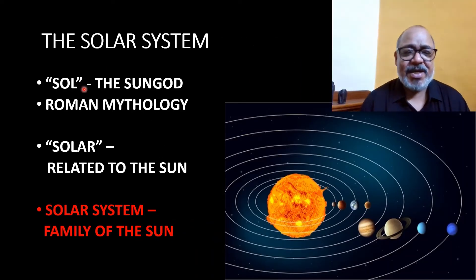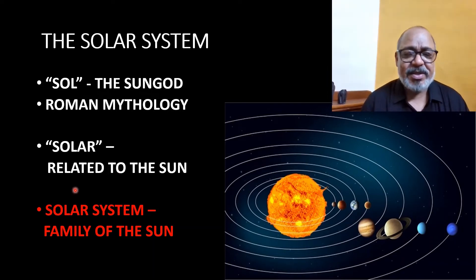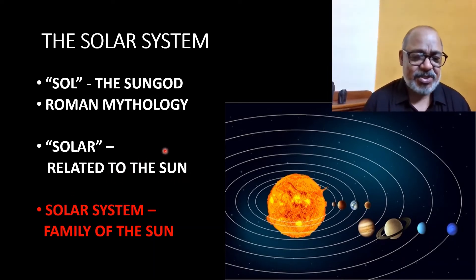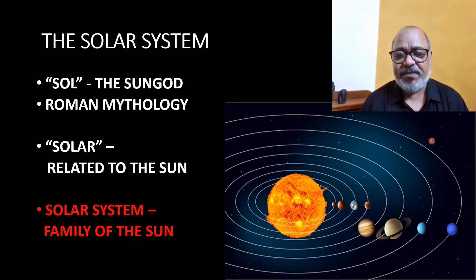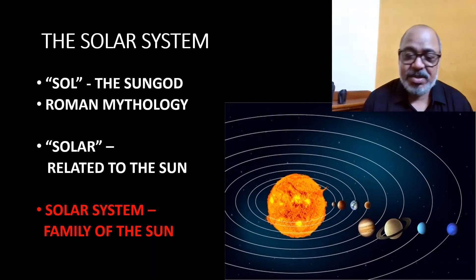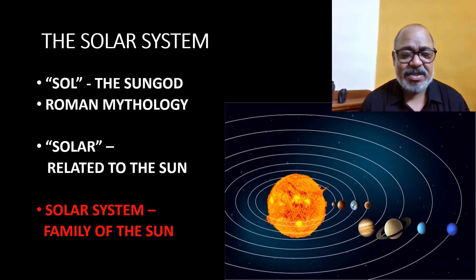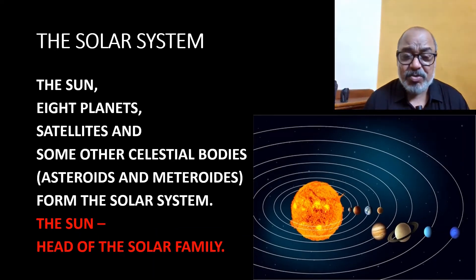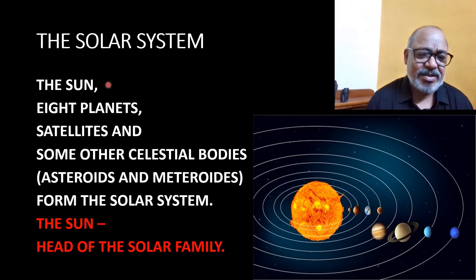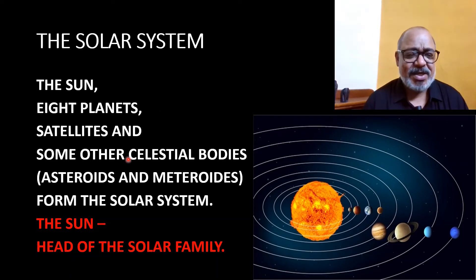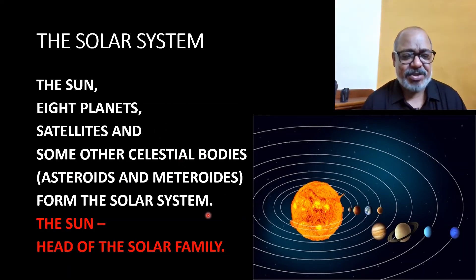Now, the solar system. The term SOL refers to the sun god in Roman mythology. The term 'solar' means related to the sun. When we say solar system, it means the family of the sun — the sun and the planets which move around it. The solar system consists of the sun, the eight planets, satellites, and other celestial bodies such as asteroids and meteoroids.